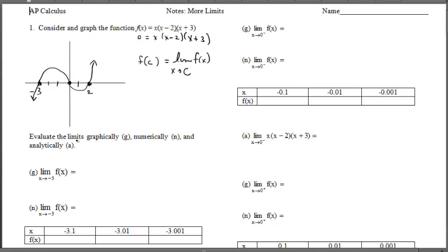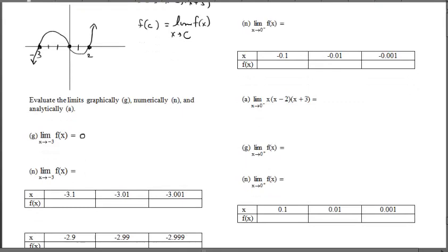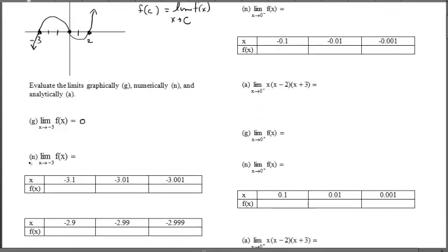We're going to evaluate limits graphically (G), numerically (N), and analytically (A). Graphically, as x approaches -3 — notice there's no superscript — our responsibility is to look at approaching -3 from both sides. Since the function is well-behaved, the y-values are going into 0. Numerically, let's support that the limit is 0 by cranking out some values using the equation stored in Y1.